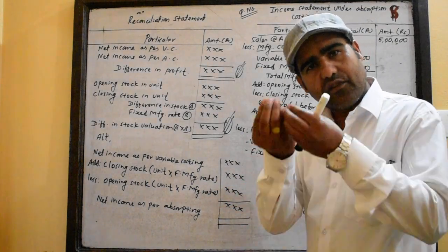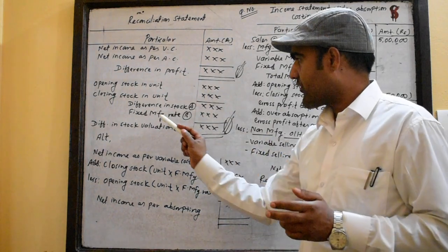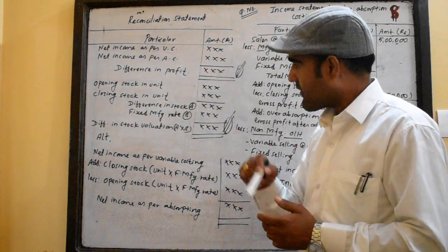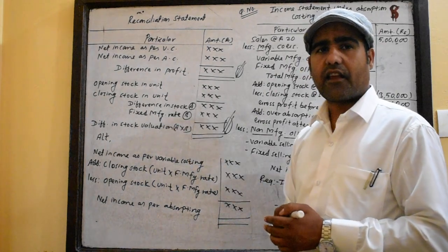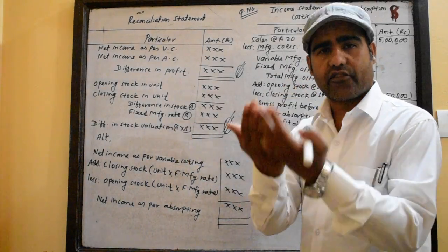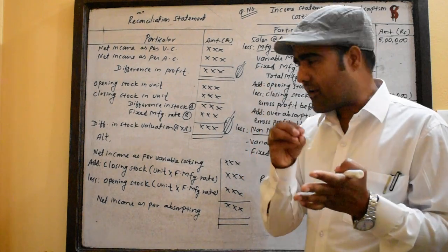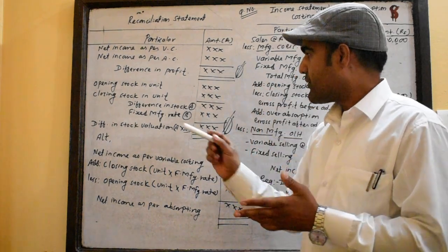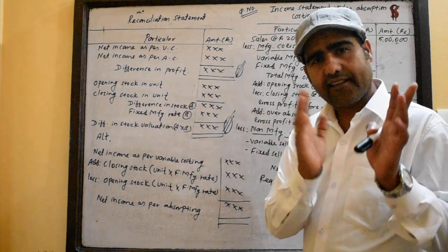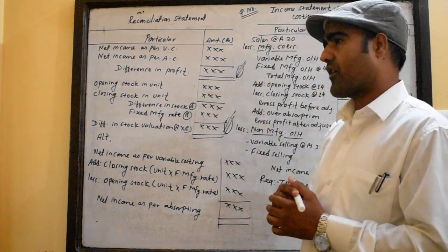If you have a fixed manufacturing value, then you can have a fixed manufacturing value as a product cost or period cost. If you have a fixed manufacturing value, you can include it.